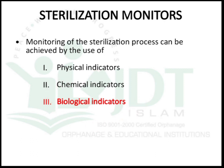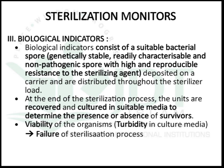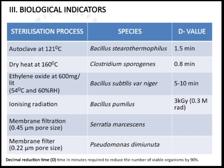Biological indicators used for sterilization monitoring consist of suitable bacterial spores that are genetically stable, readily characterizable, non-pathogenic, and with high and reproducible resistance towards the sterilizing agent. The indicator is deposited on a carrier and distributed through the sterilization load. At the end of the process, the units are recovered and cultured in suitable culture media and incubated to determine presence or absence of survival. Turbidity in the culture media indicates presence of viable microorganisms and failure of the sterilization process.